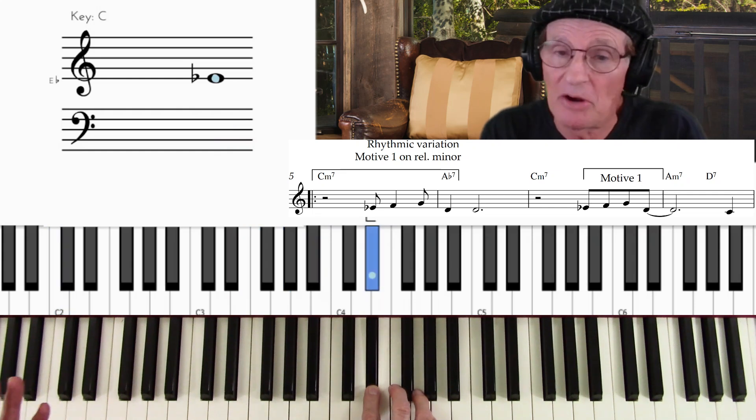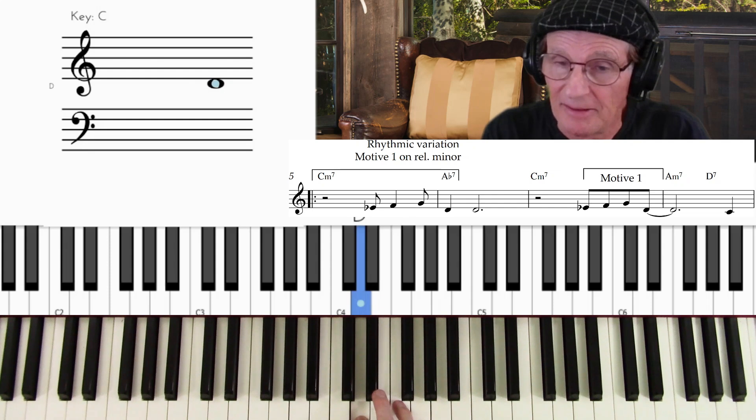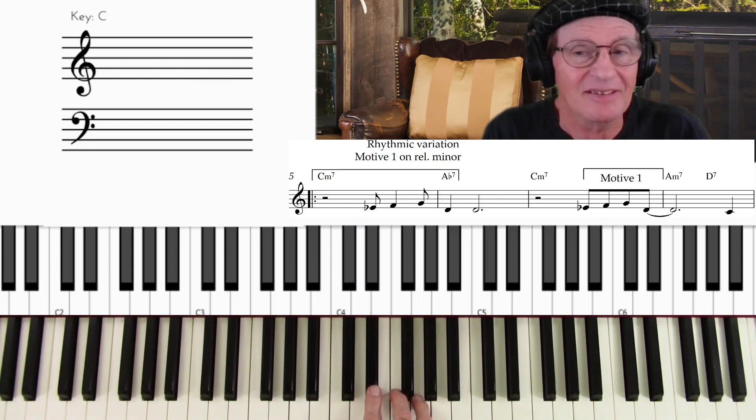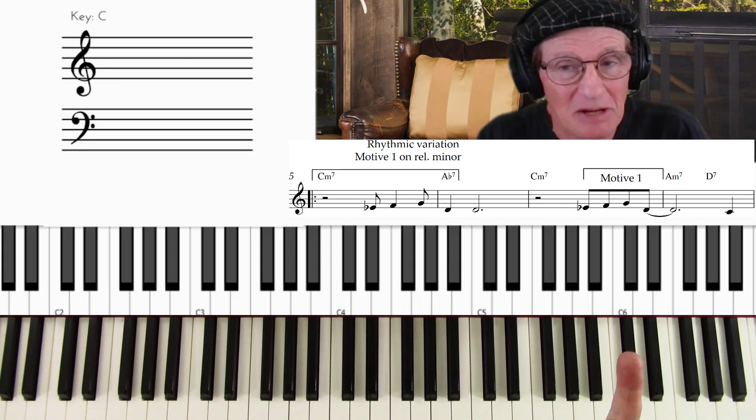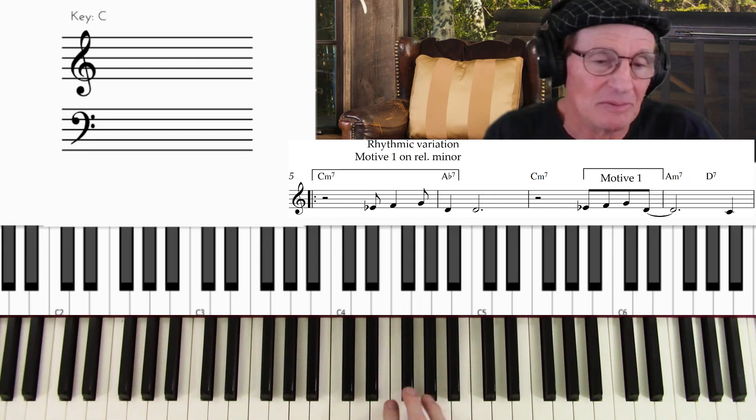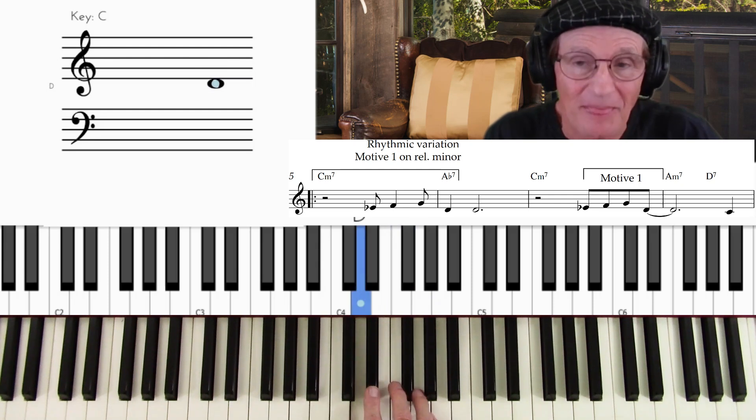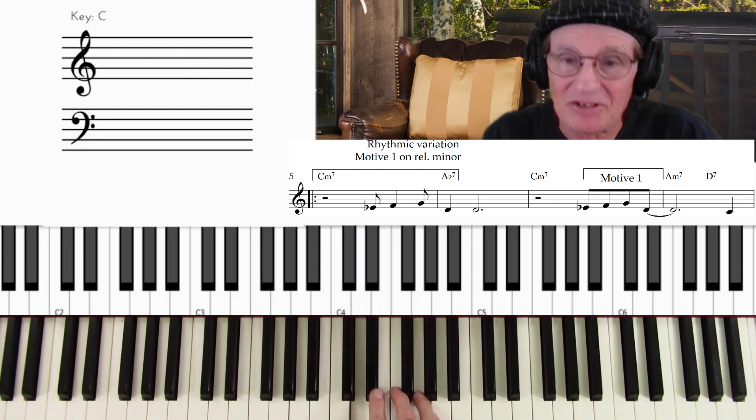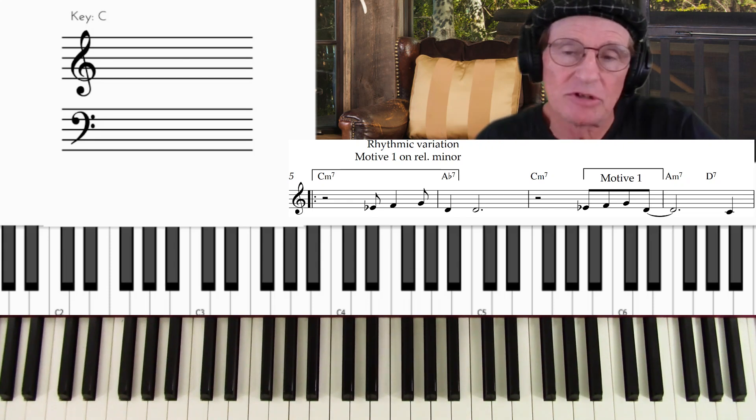Now it repeats the same phrase on C minor, but it varies the rhythm of it. It goes and it plays that note twice, so it's, you know, it's like having a conversation which you repeat yourself, and then you make a new statement, but it's similar. In other words, it leads, one leads to the other. Leads to this, and then, you see, so you hear that motive one four times in the first eight measures, and then it's progressing into another key after that.